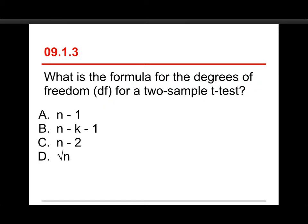Number three, what is the formula for the degrees of freedom, or the DF, for a two-sample t-test? The choices are n-1, or n-k-1, or n-2, or the square root of n. The answer is C, n-2.